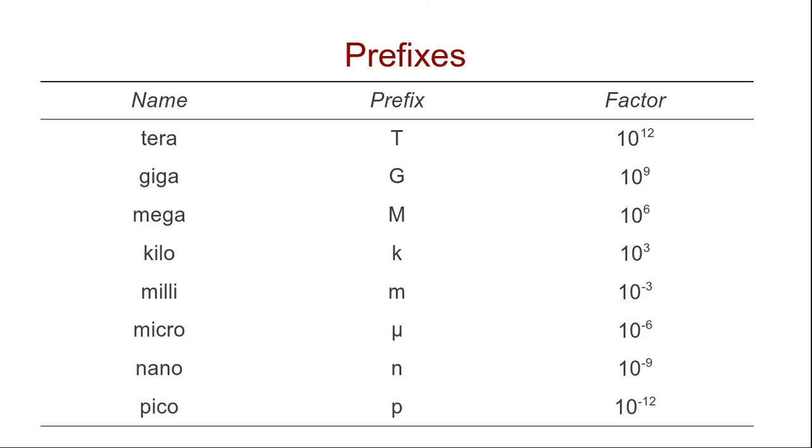For example, kilo or lowercase k is a factor of 10 to the power of 3 or 1000. One kilogram is equal to 10 to the power of 3 grams or 1000 grams. And going up we have mega, an uppercase M, 10 to the power of 6 or a factor of 1 million. Giga, 1 billion. Tera, 10 to the power of 12, and further as we go up.